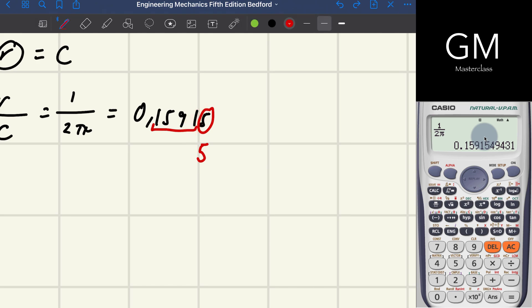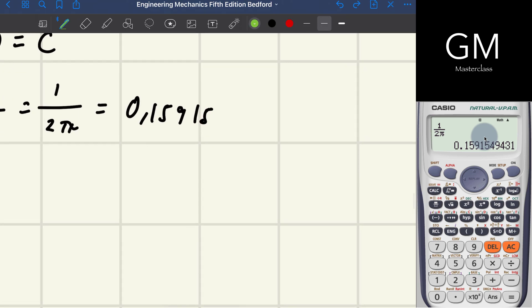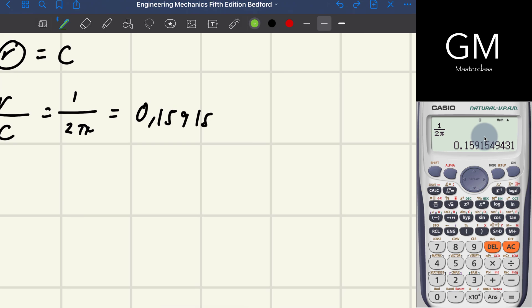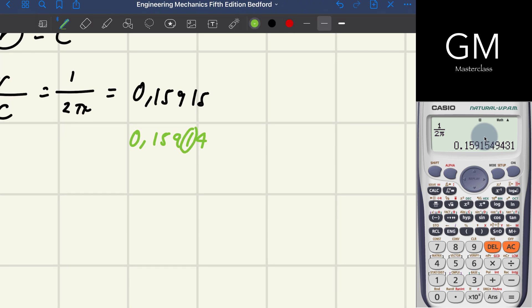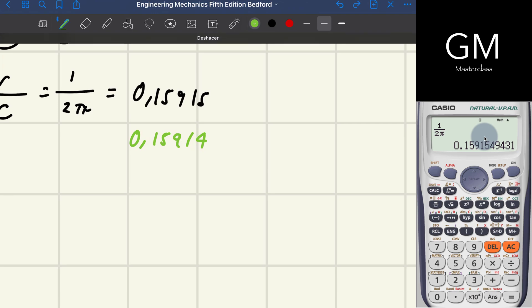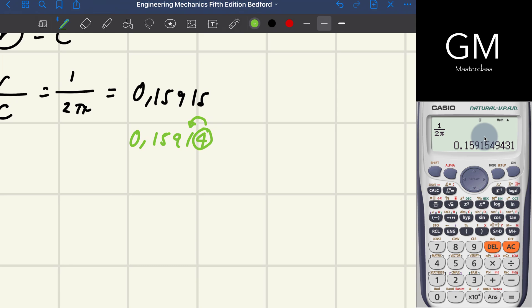For example, if the result had a 4 in the next position, we would keep the previous digit the same because a 4 tells us to maintain that number.